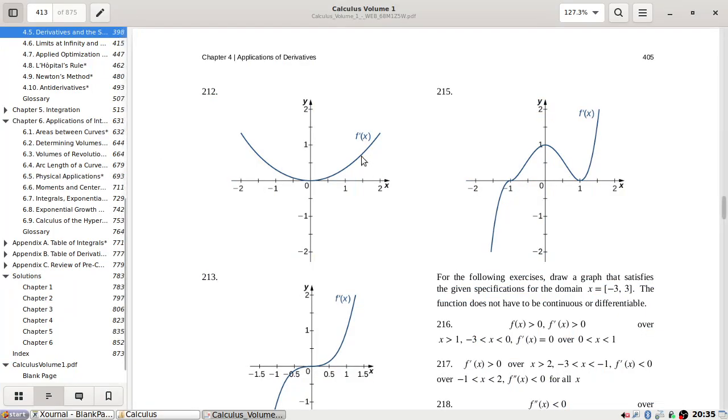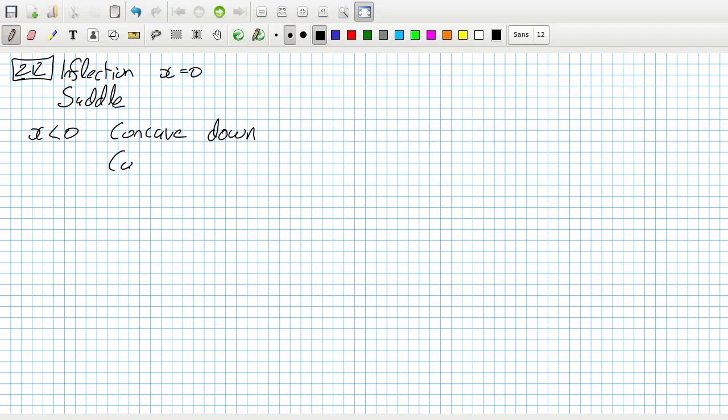And then here, positive, minimum shape, and the other one. Concave up, hopefully I have that right.